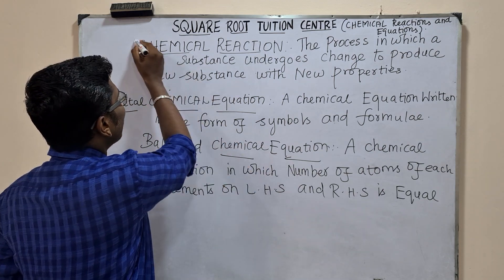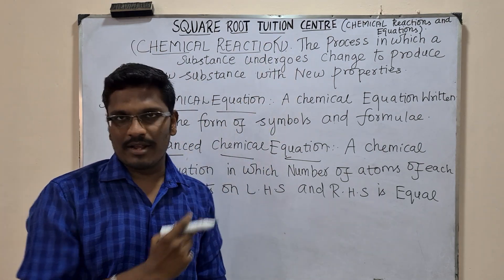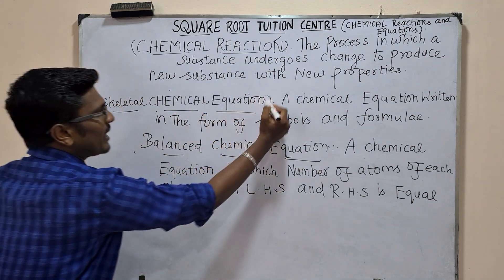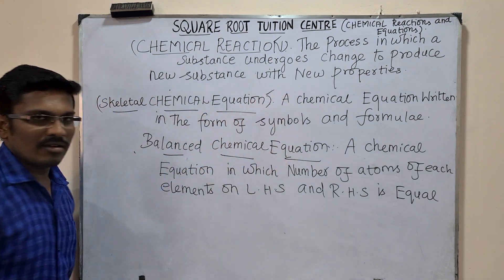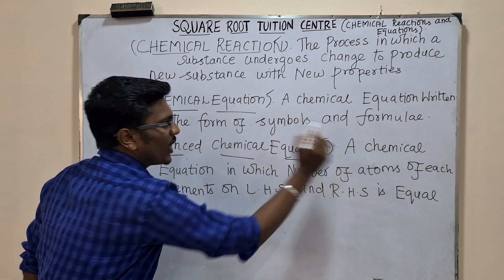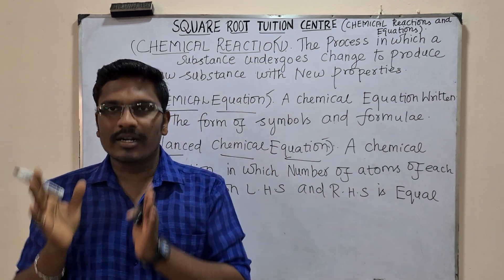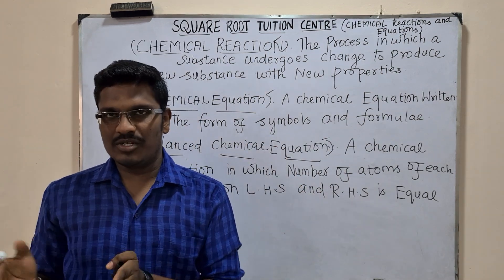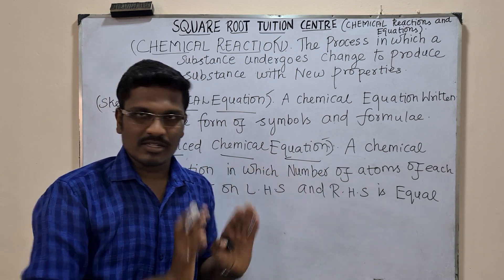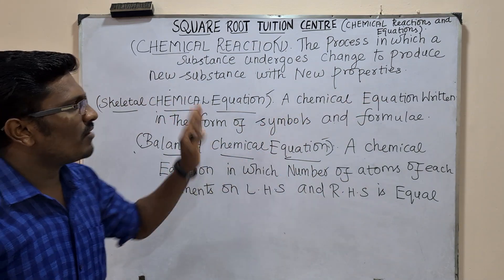That is called a chemical reaction. There are two types: one is the skeletal chemical equation, and the second one is the balanced chemical equation. A skeletal equation means the reactant is on the LHS and the product is on the RHS. The chemical reaction is written in the form of symbols and formulas.